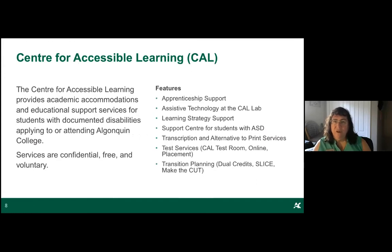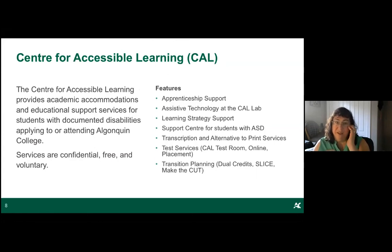If you require any academic accommodations, or received this kind of support in high school, register with the Centre for Accessible Learning — CAL — as soon as possible. If you wait until the start of semester, you'll be on wait lists. Register through the Welcome Centre, gather the necessary paperwork, and your first step will be meeting with a learning strategist who will help create a plan for your academics at Algonquin.